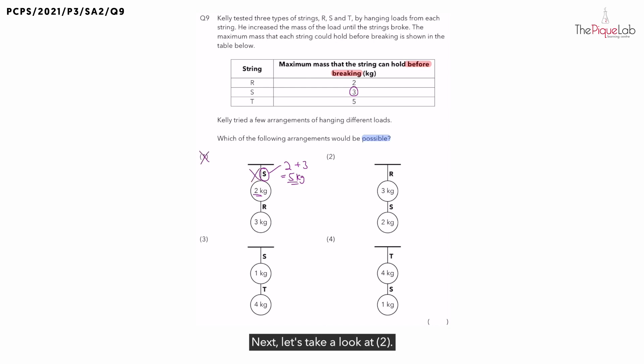Next, let's take a look at option 2. For option 2, this time we have string R. If you look at R in the table, what's the maximum mass it can support? R can support a maximum mass of 2kg. If you look at R, what is the total mass it has to support? Does it only have to support the 3kg mass? No. R has to support both the 3kg and the 2kg mass. So let's add them up together.